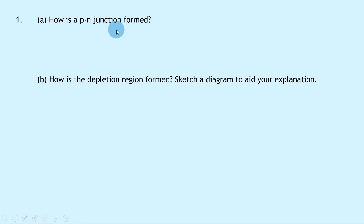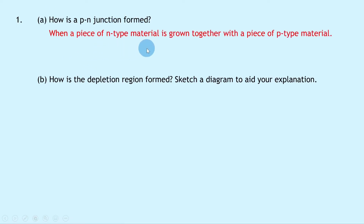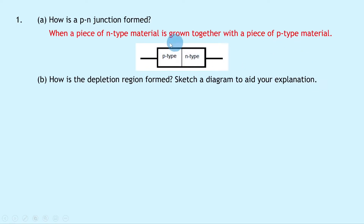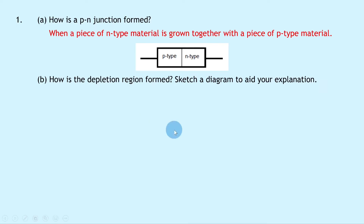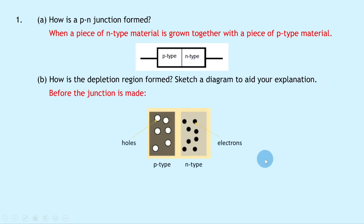Question 1a says how is a PN junction formed? Well, remember a PN junction is formed when a piece of N-type material is grown together with a piece of P-type material. This is what it looks like when it's been manufactured with the P-type and N-type side by side. Part B then says how is the depletion region formed? Sketch a diagram to aid your explanation. We're going to go through the steps outlined in the theory video for forming a PN junction, but we can start by saying that before the junction is made we get something that looks like this.